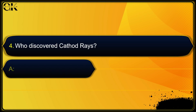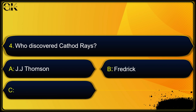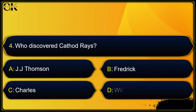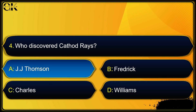Who discovered cathode rays? Options: JJ Thompson, Frederick, or Charles Williams. The answer is JJ Thompson.